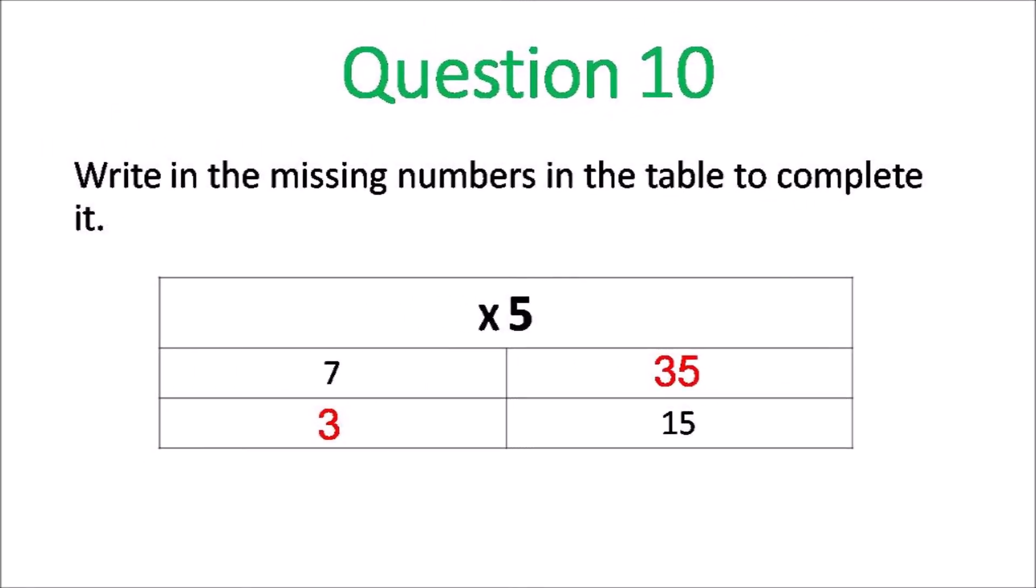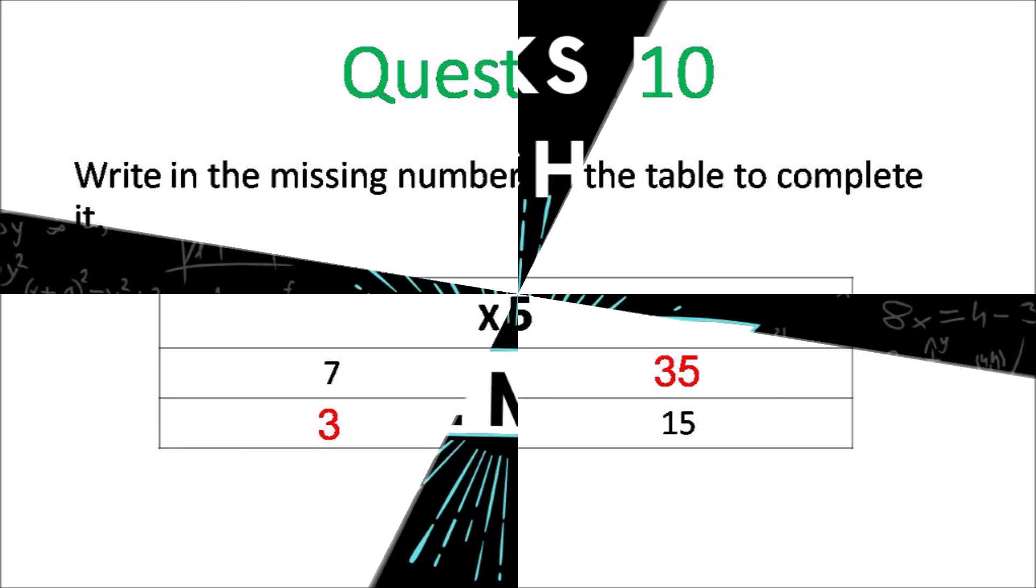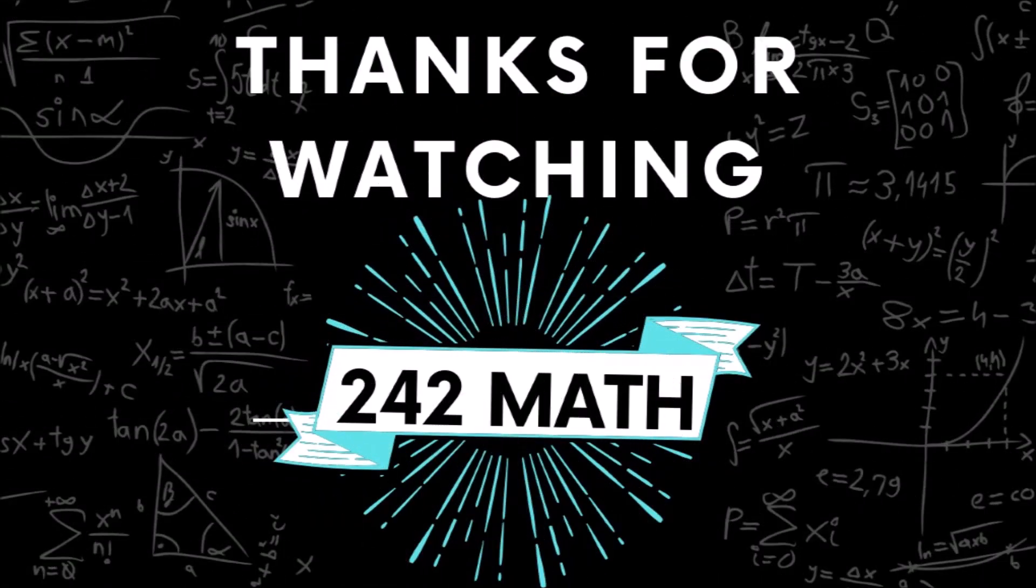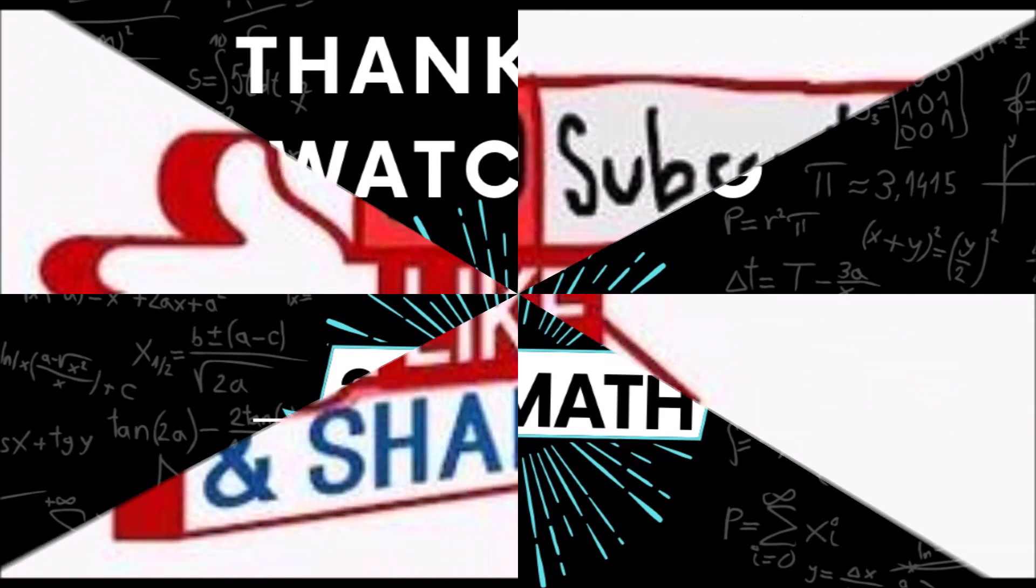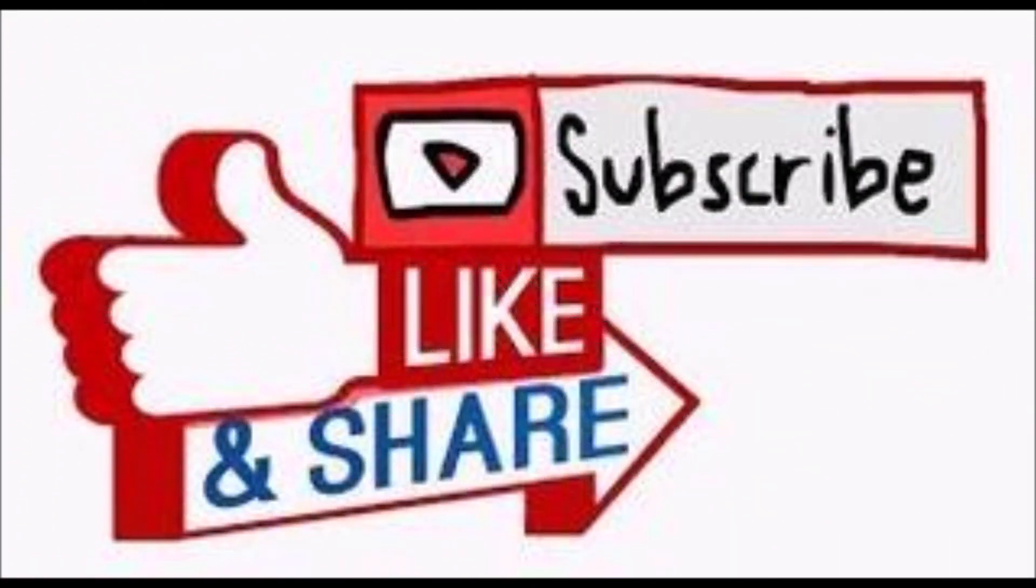And the final one. 7 times 5 is 35. And number times 5 is 15. Has to be 3. Thank you all for watching. Hope you got 100% on this test. If not, go back, work the questions over, do them again. Remember, teachers give students more time to work. I will see you in the next one. That's a wrap.